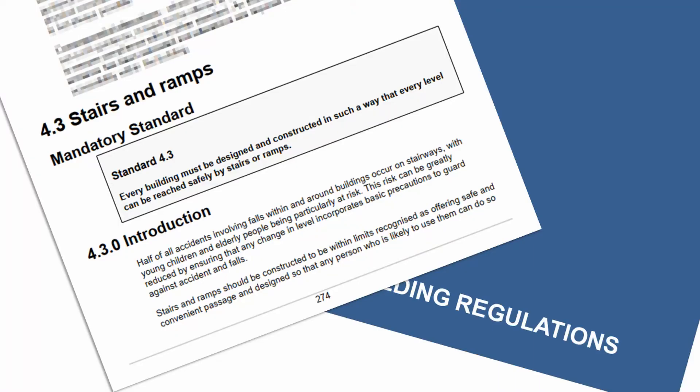The standards we're going to be using are the Scottish Building Regulations. Section 4.3, Stairs and Ramps, gives a mandatory standard which says every building must be designed and constructed in such a way that every level can be reached safely by stairs or ramps. There's a note, 4.3.0, that about half of accidents involving falls within and around buildings occur on stairways, so the design of stairways is very important in terms of safety.